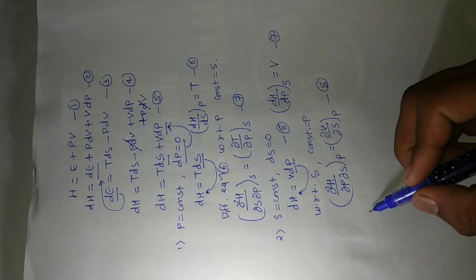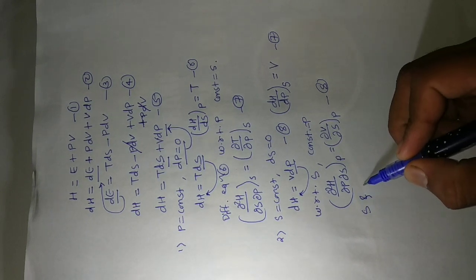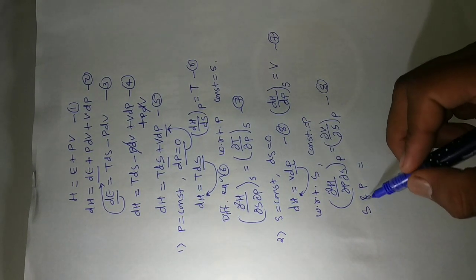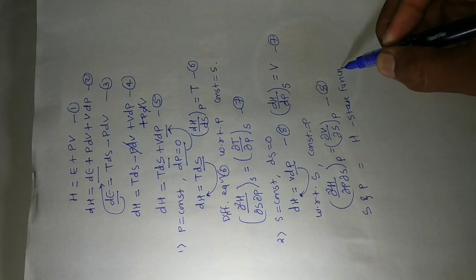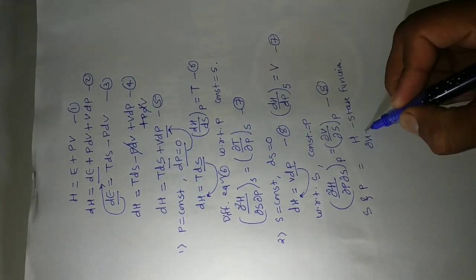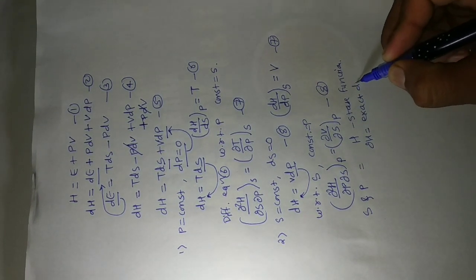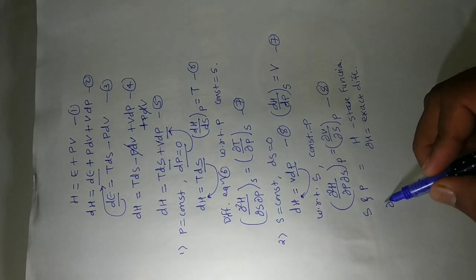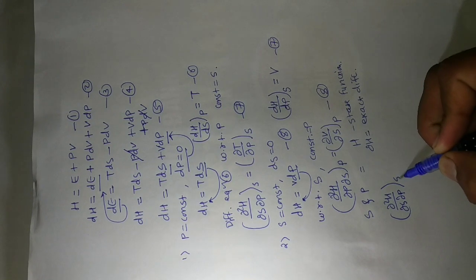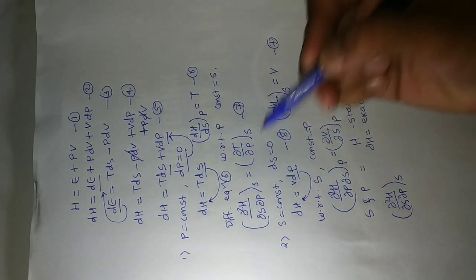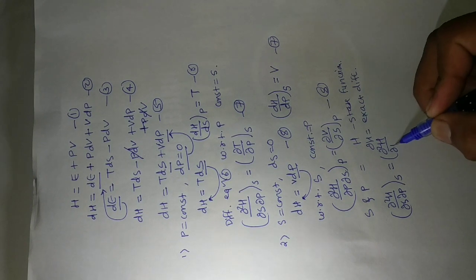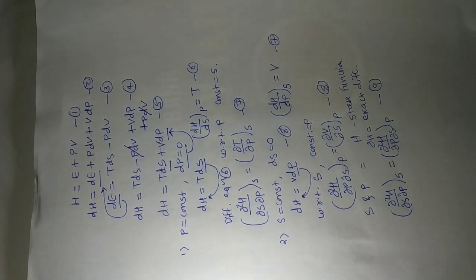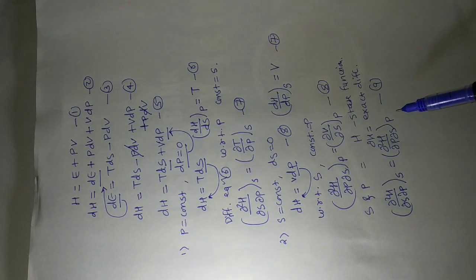Here we have two quantities: entropy and pressure. Along with that, H is a state function, so dH is an exact differential. Therefore, d²H/dS dP at constant S is equal to d²H/dP dS at constant P. This is equation number nine — the mixed partial derivatives are equal.